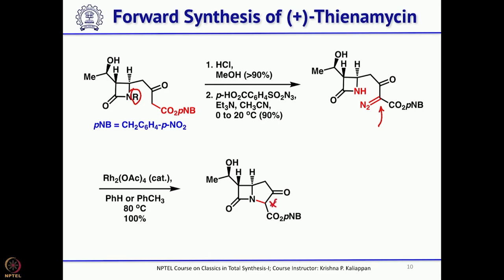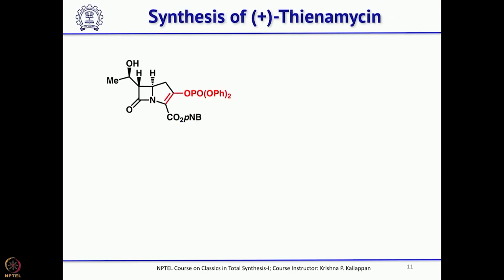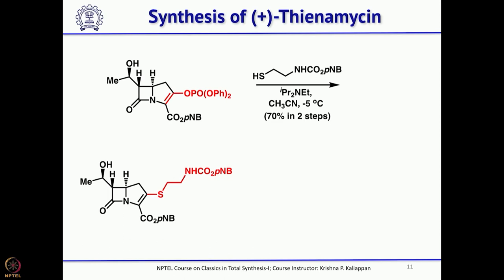The stereocenter formed during carbene insertion is not important because in the natural product thienamycin there is a double bond at that position. So the beta-ketoester is treated with diphenylphosphoryl chloride to form the enol phosphate. This enol phosphate can then undergo 1,4-addition followed by elimination — the addition–elimination reaction with the thiol gives the expected product.